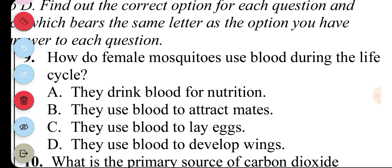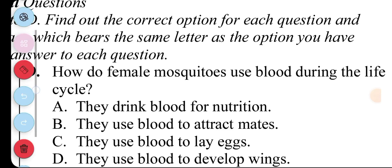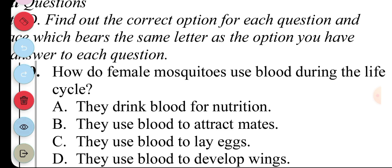Question 9. How do female mosquitoes use blood during their life cycle? A. They drink blood for nutrition, B. They use blood to attract mates, C. They use blood to lay eggs, D. They use blood to develop wings. The answer to question 9 is C. They use blood to lay eggs.